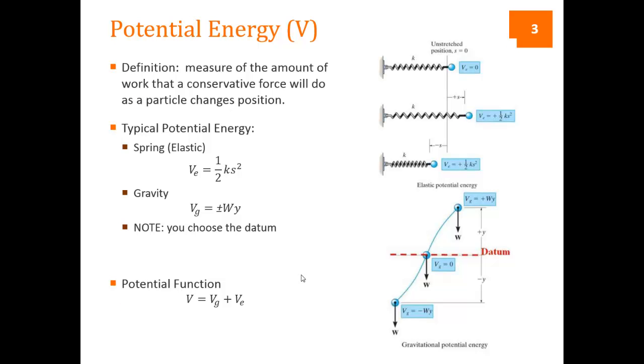When we have conservative forces, we create potential energy. The definition of potential energy is the measure of the amount of work that a conservative force does as a particle changes its position. Potential energy in this book uses the letter V. Kinetic is T. In physics, you often have PE for potential, KE for kinetic. But here we're going to use V and T.